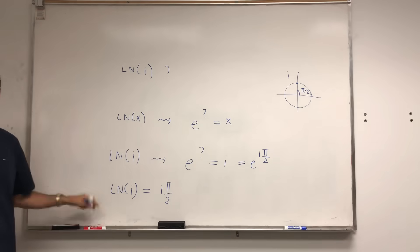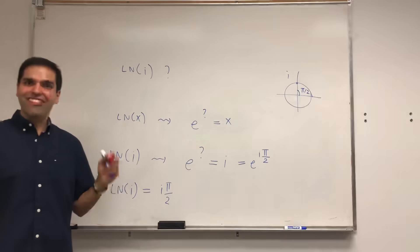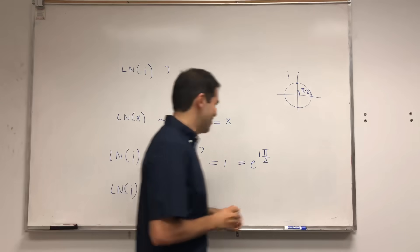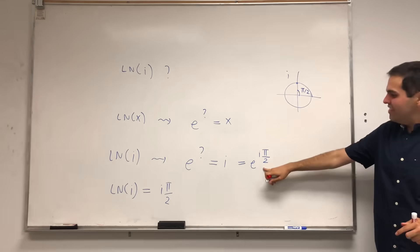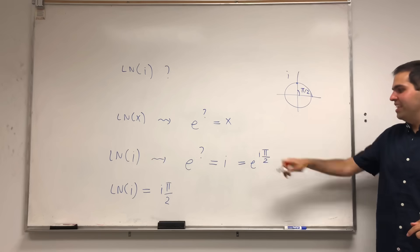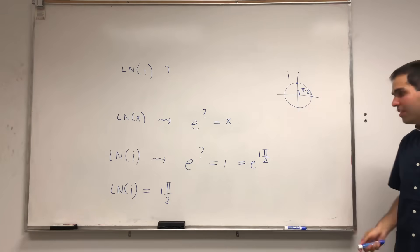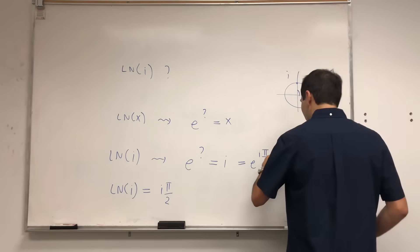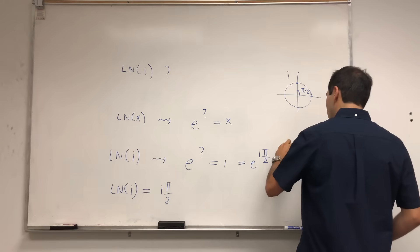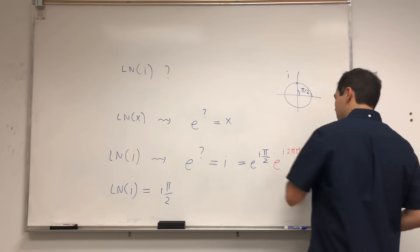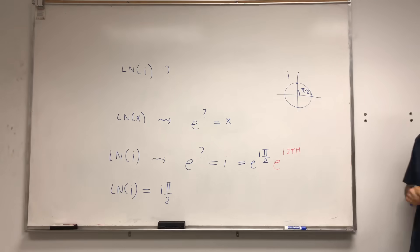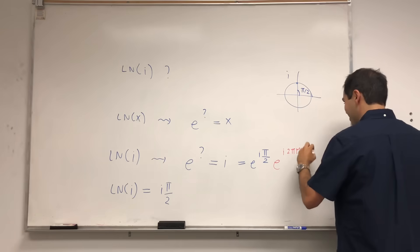Except, there is a caveat. And by the way, I love this word, caveat, it reminds you of caviar. Because, well, it is true that i is e^(iπ/2), but we can add other things. What about e^(i2πn)? You know, πn, because of me, where n is an integer.